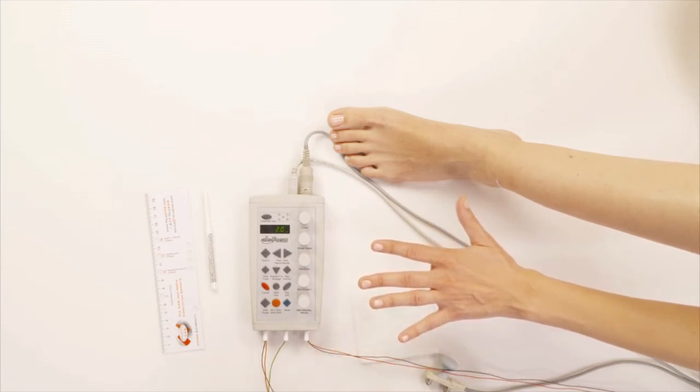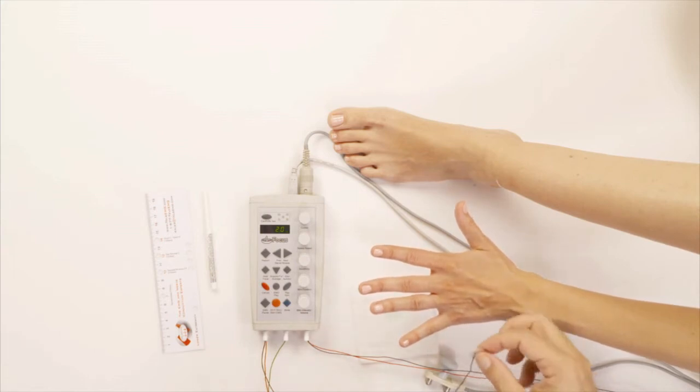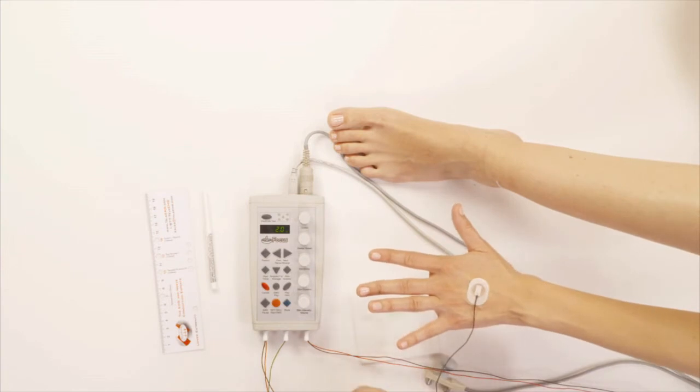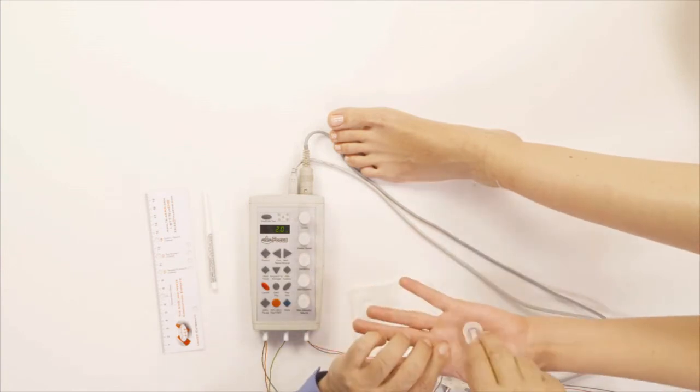So channel one electrode, we're going to put the active electrode, the black electrode, on the back of the hand like so and the reference electrode on the palm of the hand like so.